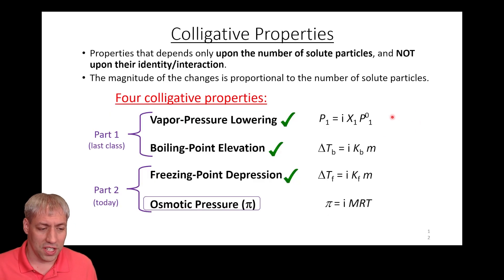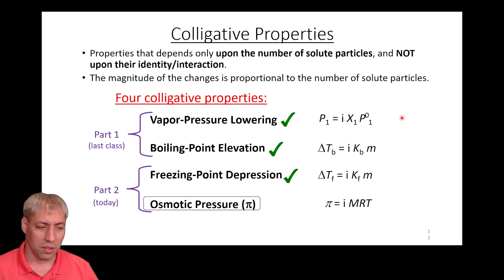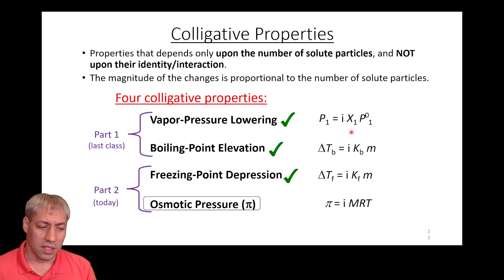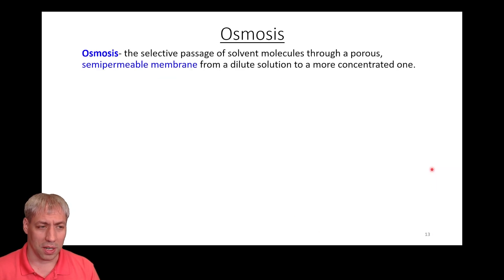That closes out freezing point depression. To summarize: add solute and vapor pressure decreases; add solute and the boiling point becomes higher; add solute and the freezing point becomes lower. The last colligative property we're going to talk about is osmotic pressure.